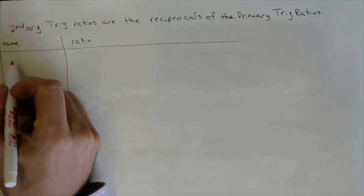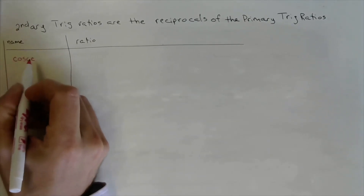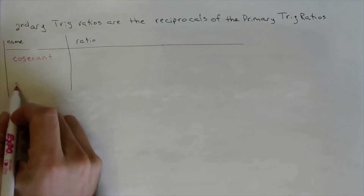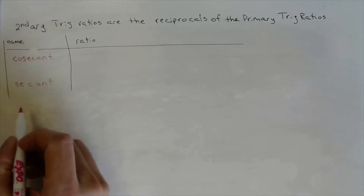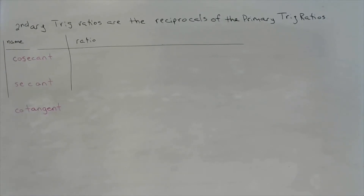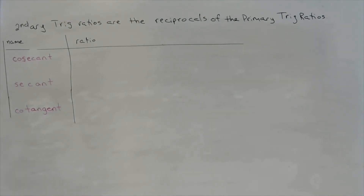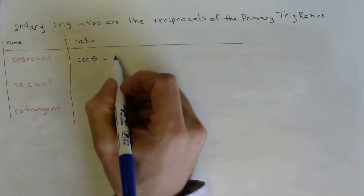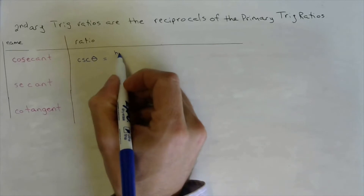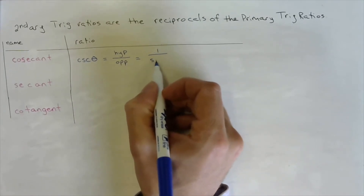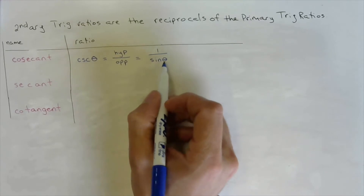The three secondary trig ratios are called cosecant, secant, and cotangent. Cosecant is the reciprocal of sine, so cosecant of angle theta equals hypotenuse over opposite, which equals one over sine of theta. That means it's the reciprocal of the sine ratio.